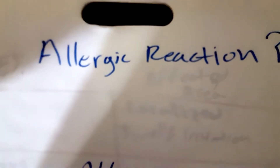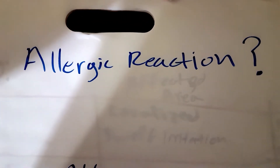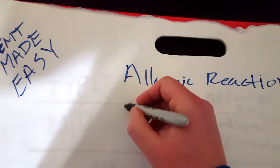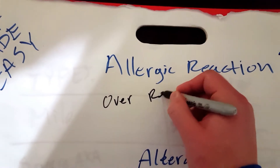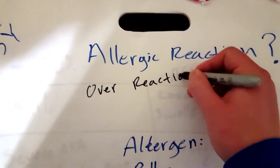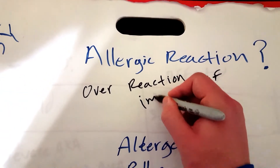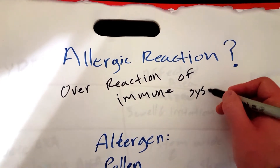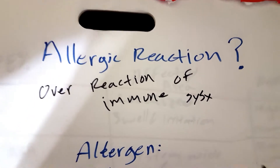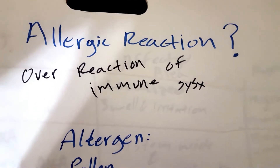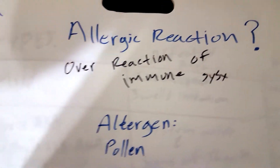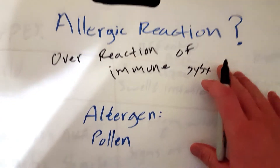Today we are going to be going over allergic reactions. So what are allergic reactions? An allergic reaction is just an overreaction of the immune system. Your immune system overreacts — that's what it means.